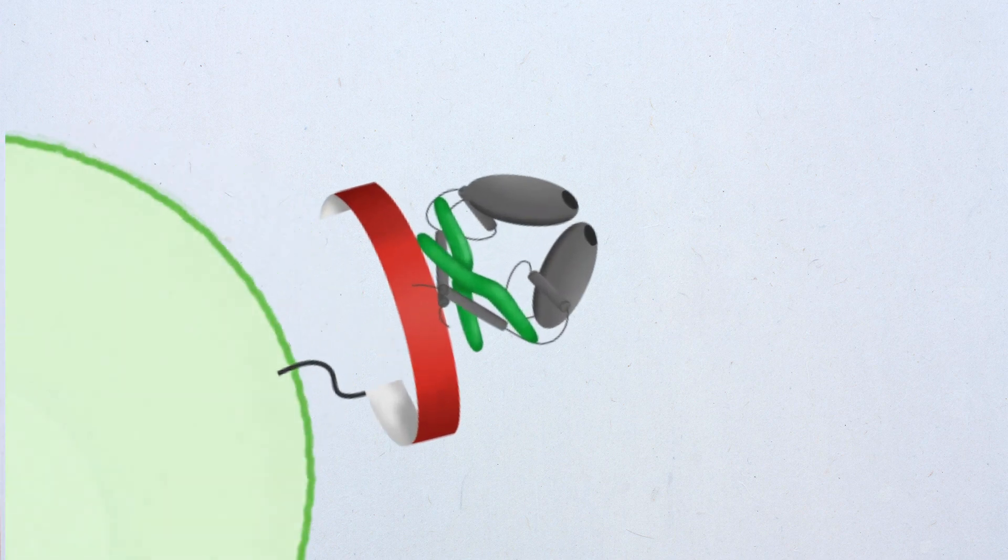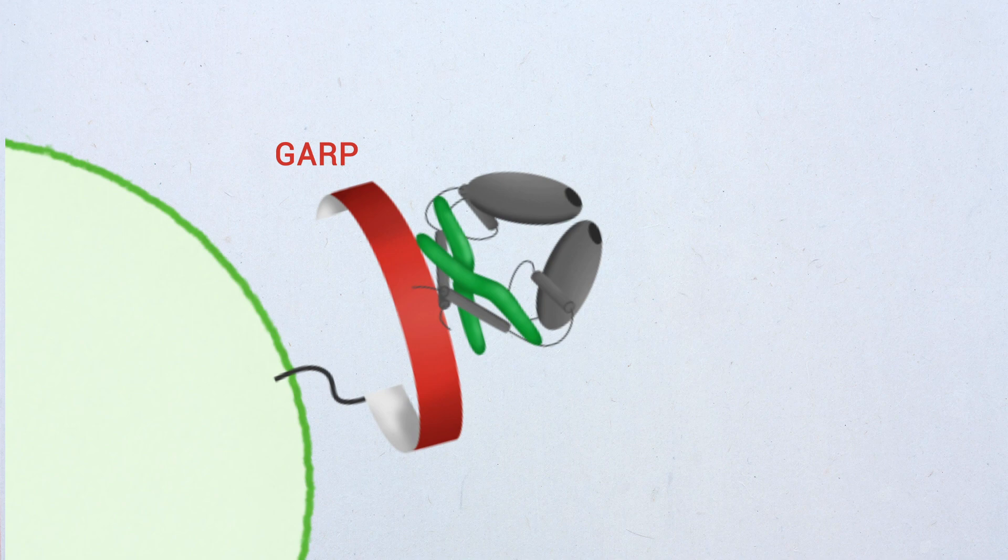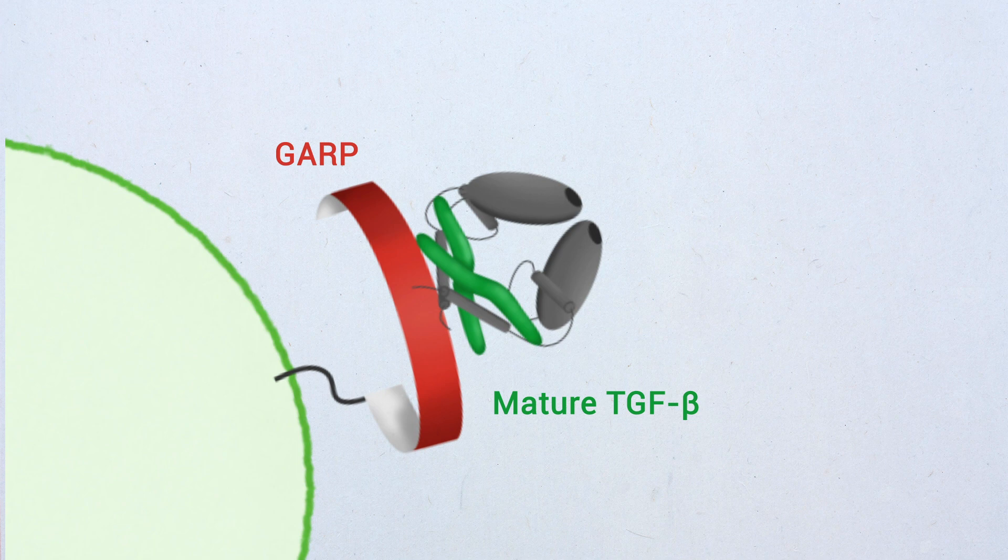Indeed, TGF-beta dimers in an inactive state form bonds with GARP. They comprise a mature part, or mature TGF-beta, which is non-covalently associated to another part called LAP, which maintains mature TGF-beta inactive.